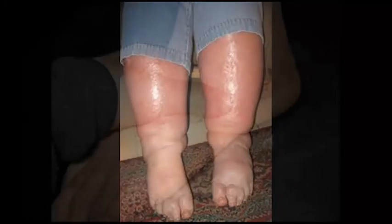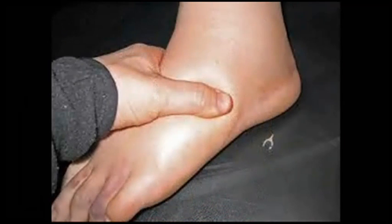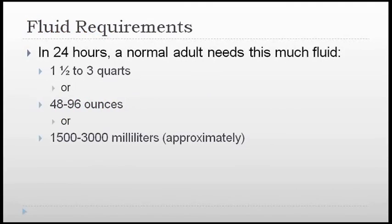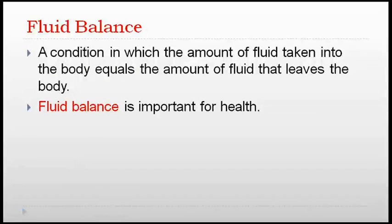Other older people may have trouble with fluid buildup in their bodies, a condition known as edema. People with kidney or heart disease may be prone to edema and may be on pills called diuretics to get rid of excess fluid. In a 24-hour period, a healthy adult will take in about 48 to 96 ounces of fluid, which is approximately 1,500 to 3,000 milliliters, and about the same amount of fluid will leave their body. This is called fluid balance.